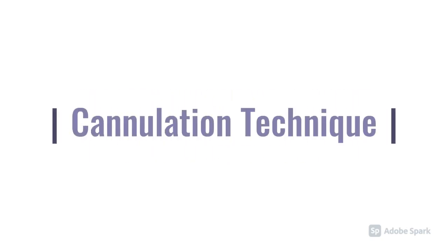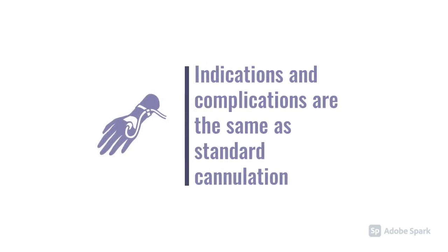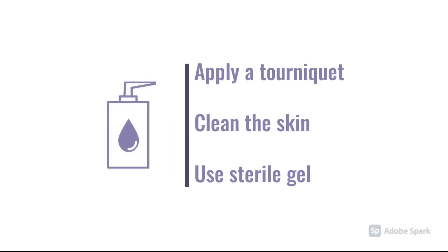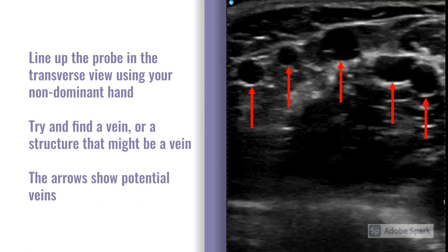Moving on to the cannulation side. The indications, contraindications, and complications are all the same as for normal cannulation. Key things to get right are the positioning of the patient and yourself — the ultrasound screen must be in your line of sight, as must the patient's limb, and your cannulation tray must be reachable. Make the patient comfortable, using a pillow to support the limb if needed. Once set up, apply a tourniquet and use a reasonable amount of sterile gel on the probe. Clean the skin for infection control. Hold the probe transversely with your non-dominant hand and use your dominant hand for cannulation, then go hunting for veins.